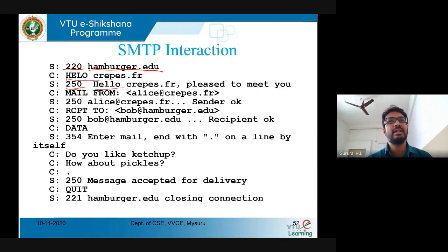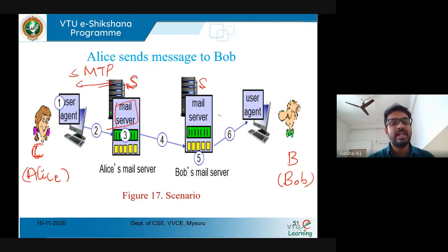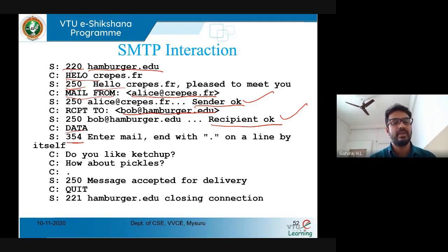The server then validates whether the client address and receiver address are correct. The MAIL FROM command is used with Alice's mail address. The server validates Alice's address and responds that the sender is okay. The client also sends the receiver's mail address — Bob's — and the server validates it and confirms the recipient is also okay. Only after validating both the sender and receiver mail addresses will the server accept the data from the client.